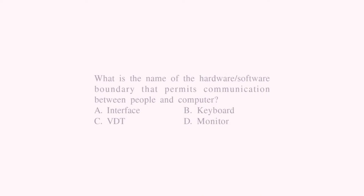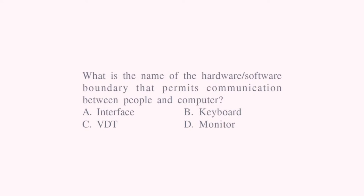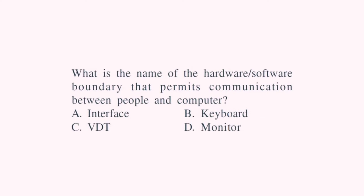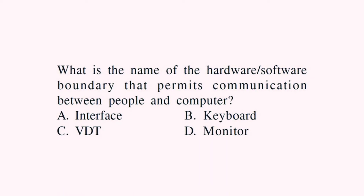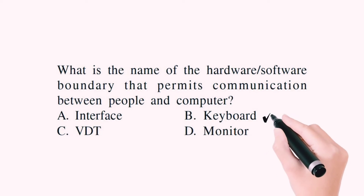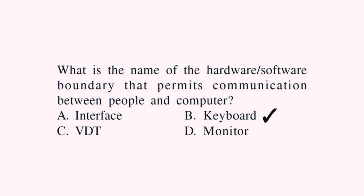What is the name of the hardware-software boundary that permits communication between people and computers? Interface — which allows communication. VDT — no. Monitor — no. Keyboard — yes. The right answer will be the keyboard, as we can give input to the computer.